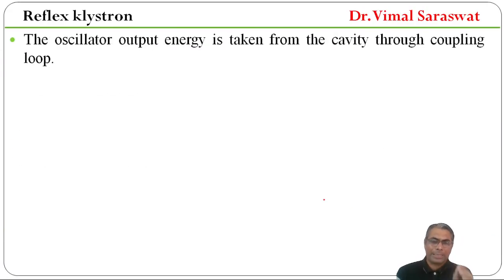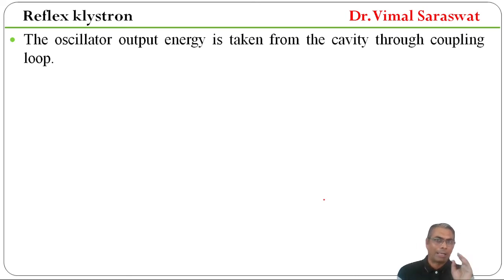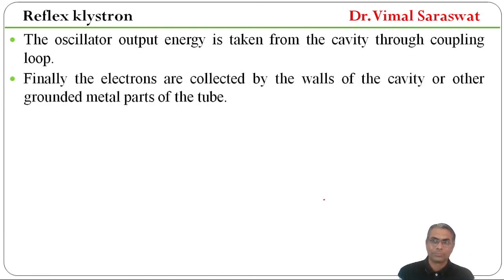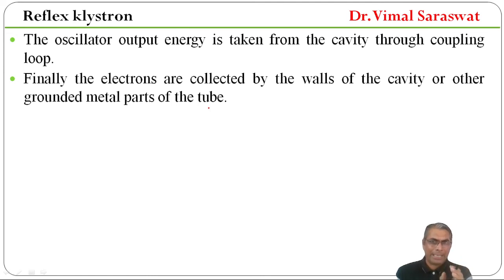The oscillator output energy is taken from the cavity through the coupling loop. Finally, the electrons are collected by the walls of the cavity and other grounded metal parts of the tube.